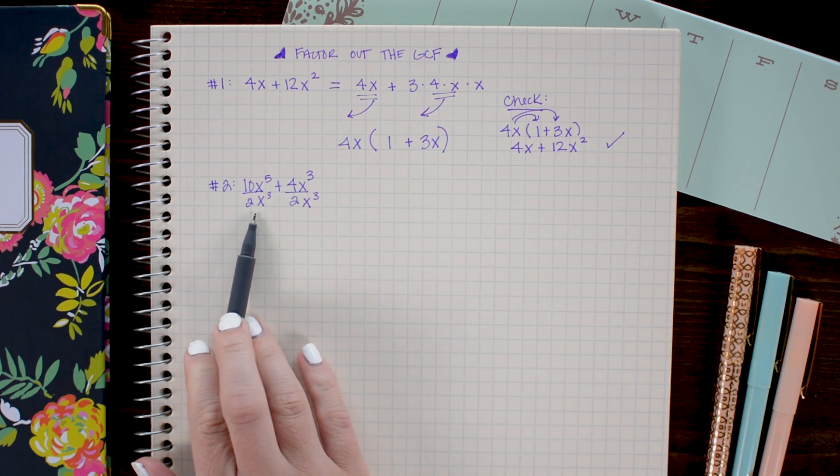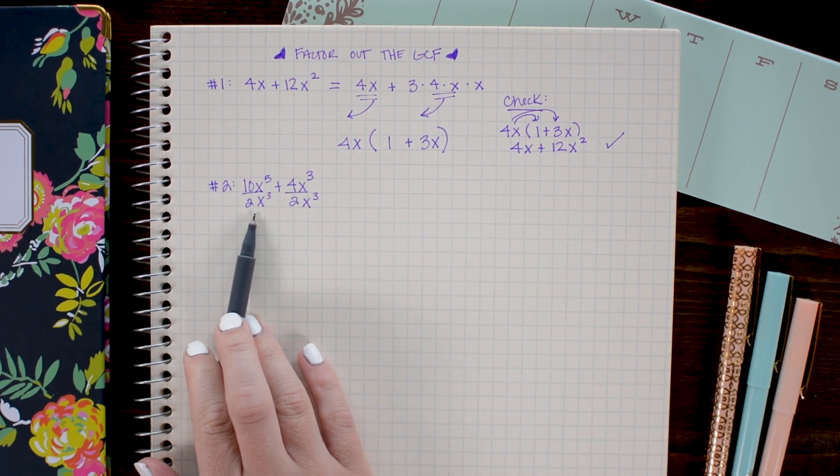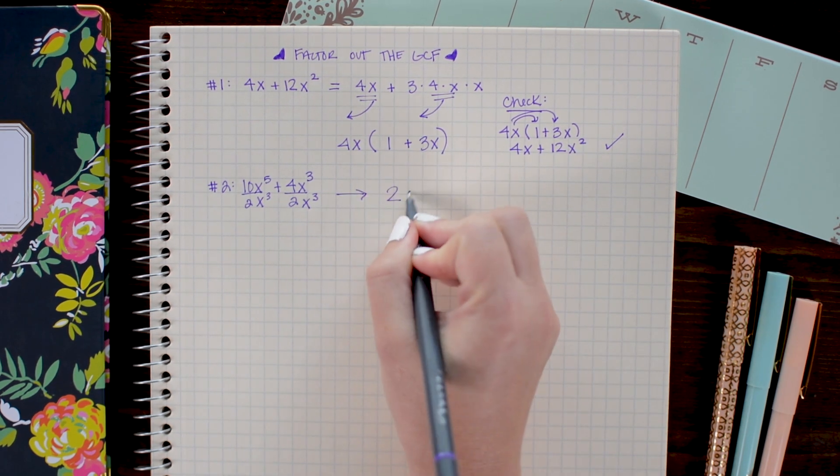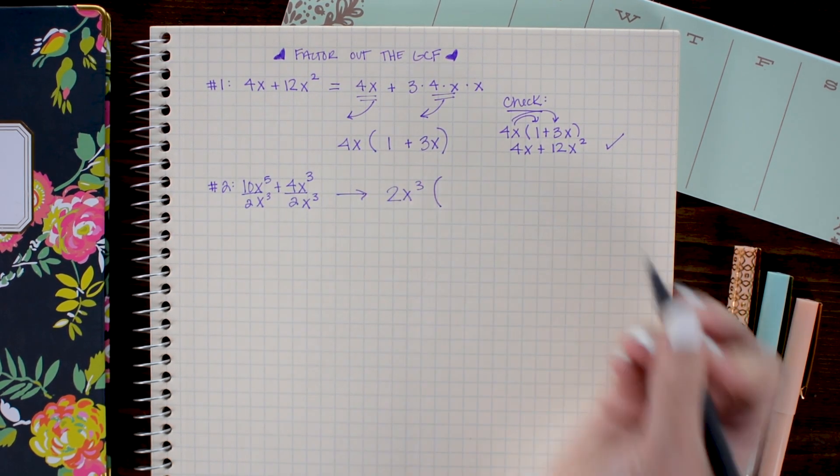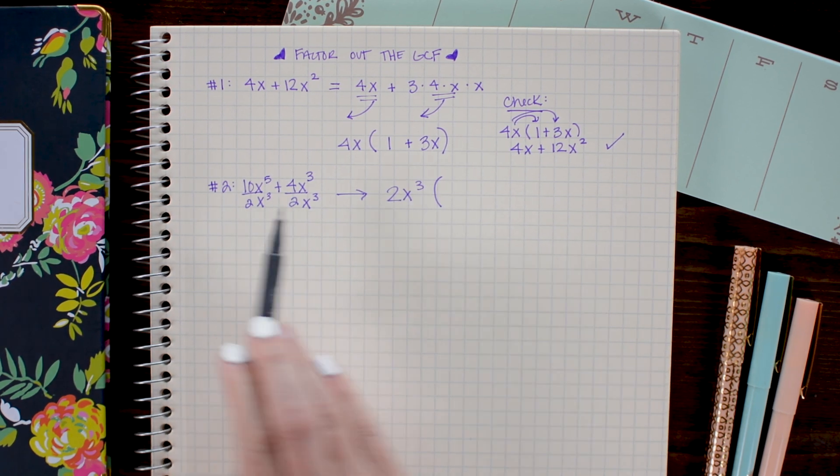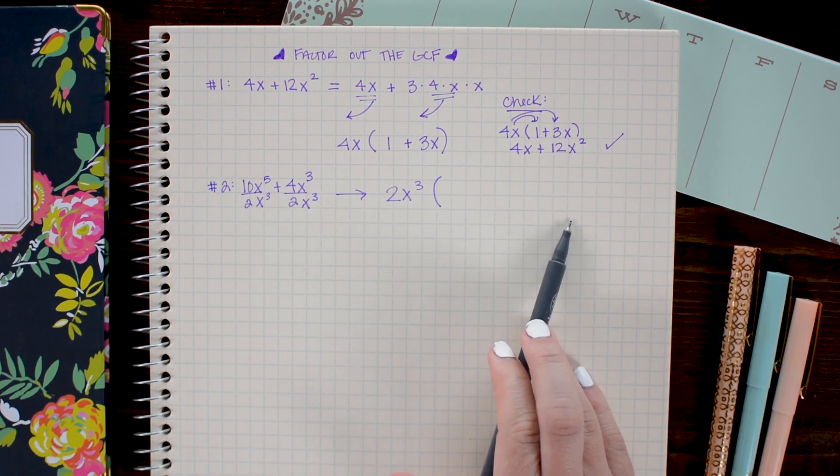This means that 2x cubed is the greatest common factor that we are going to factor out.